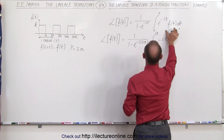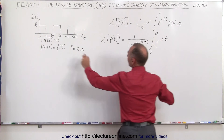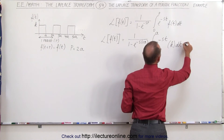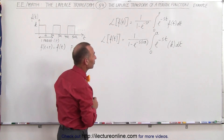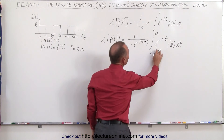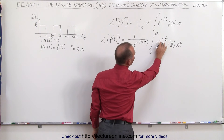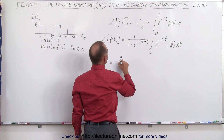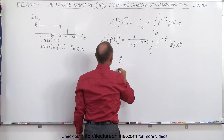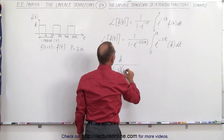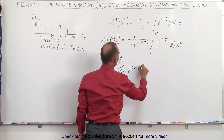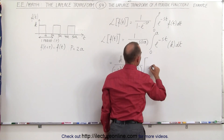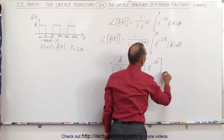This is just a single period, and the value of the function over that interval is simply the height of the pulse, which is equal to k, times dt. Now k is a constant so it can come outside the integral sign, and when we integrate e to the minus st we end up with a minus s in the denominator. So this becomes k times, with a minus s in the denominator, times 1 minus e to the minus 2as, and we evaluate e to the minus st from 0 to a.